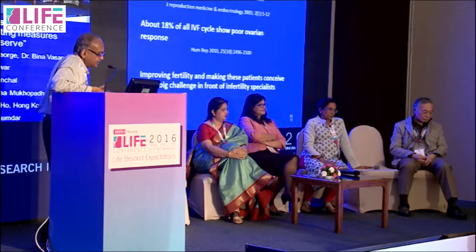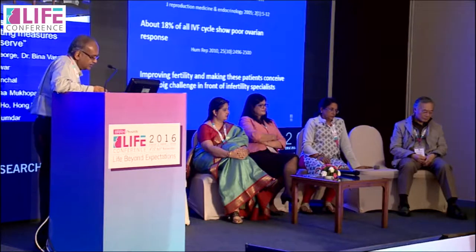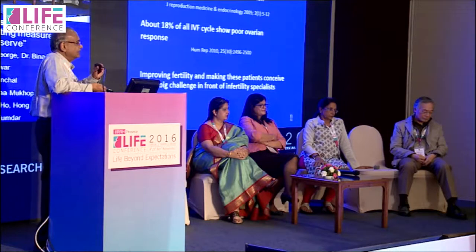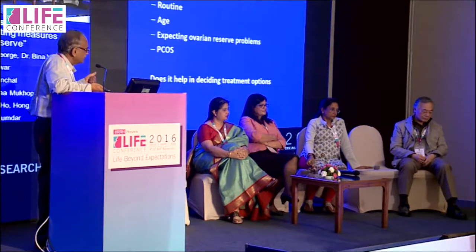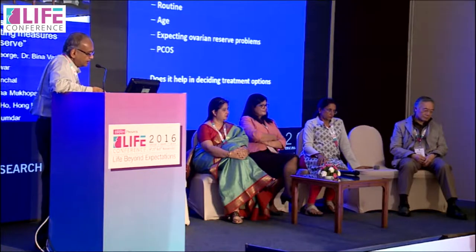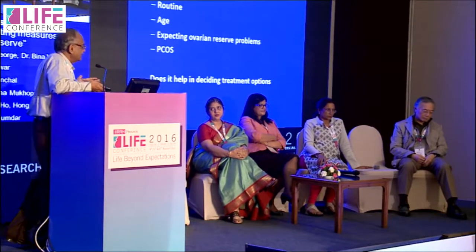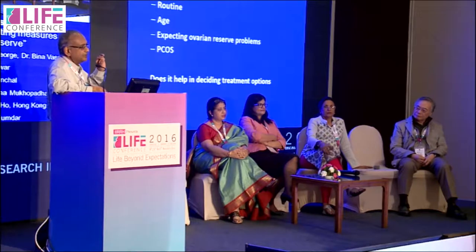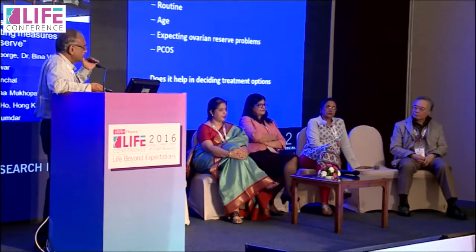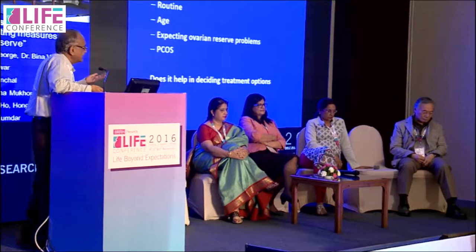Diminished ovarian reserve is seen in about 24% of infertile women, and about 18% of IVF cycles will show a poor response. Improving fertility in these patients is a big challenge. Testing is not done as a routine for all, but when doing IVF it helps decide the starting dose — for example, if AMH is very high (say 18), you always start with a much lower dose first.